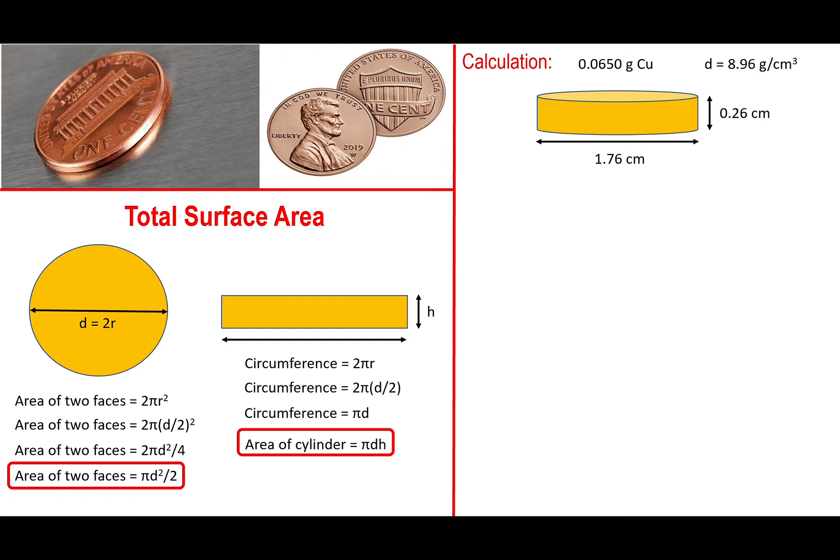So what we're going to do first is calculate the total surface area of the penny, which, once again, is πd²/2 plus πdh. So what you have to do is input the diameter value for the penny into the formulas and also enter the height of the penny. The only caveat is that if the measurements were done in millimeters or any other unit other than centimeters, you have to change all of the lengths to centimeters. In the example here, everything is in centimeters, so we're ready to basically proceed forward. So we multiply 1.76 by π. Well, first we square 1.76, then we multiply by π and divide by 2. That gives us the area of the two faces of the penny.